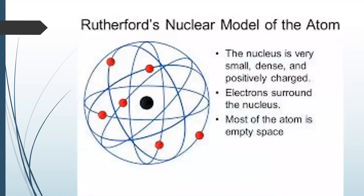This is the image of Rutherford's nuclear model of the atom, which shows the nucleus is very small, dense, and positively charged. Electrons surround the nucleus. Most of the atom is empty space.